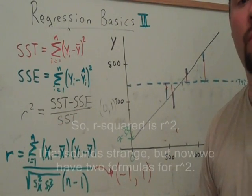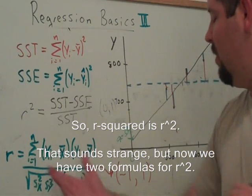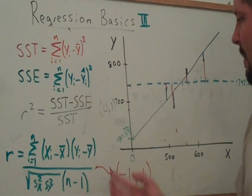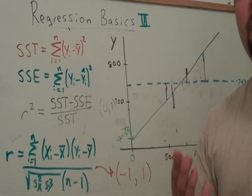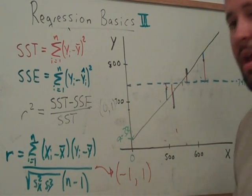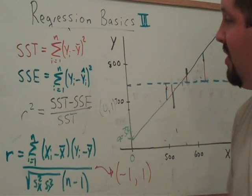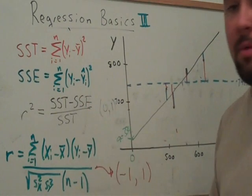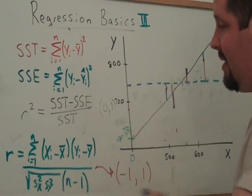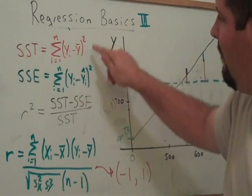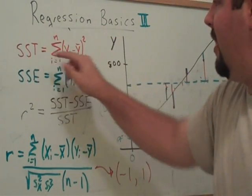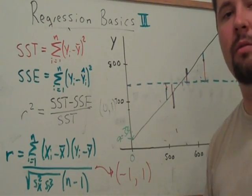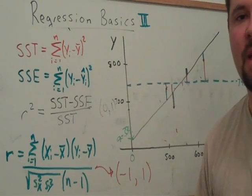Remember the correlation coefficient from the previous video. The correlation coefficient from the previous video had this really hairy formula, and it turned out to give us the strength of the association as well as which direction the association is. Turns out if you square it, it tells you the proportion of the variability that we explained in the response variable. Remember this is the variability in the response variable to be explained. It's the proportion that we explained just exploiting the linear relationship between X and Y.